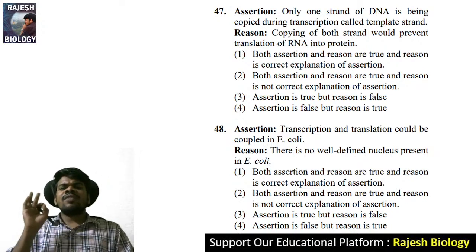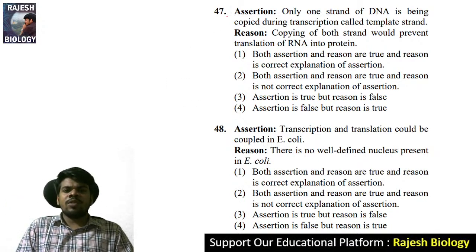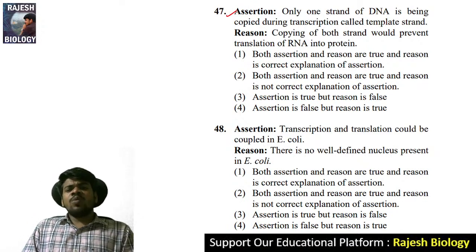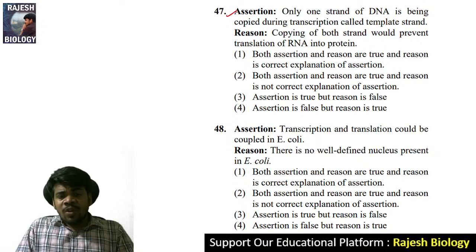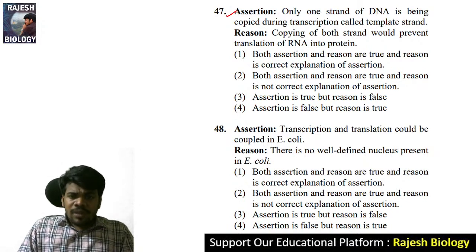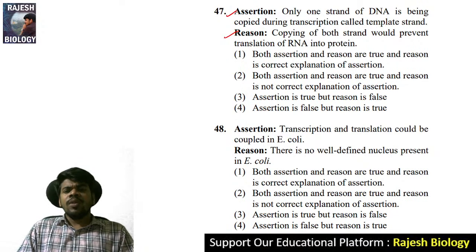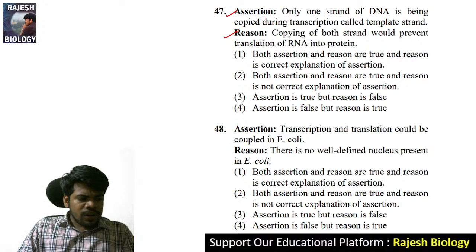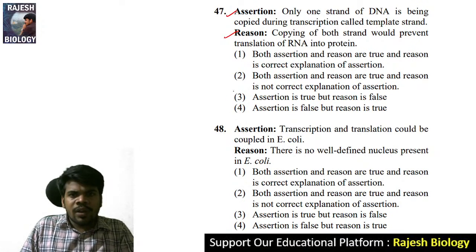Question 47: only one strand of DNA is copied during transcription — called the template strand. Copying of both strands would prevent translation of RNA into protein. Because of this, only one strand acts as the template strand. If both strands were transcribed, that would prevent translation of RNA into protein. The right answer given by Dinesh, Jnaneshwari, and Aparna.